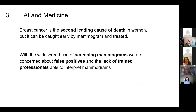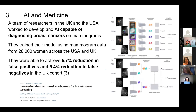Breast cancer is the second leading cause of death in women, but it can be caught early with a mammogram and treated. However, when we screen millions of women with mammograms each year, you're going to get false positives and there won't be enough radiologists to keep up with demand. A team of researchers worked on an AI capable of detecting breast cancers from mammogram data — training their AI on more than 28,000 women's mammogram datasets. You would have to spend your entire career reading x-rays to achieve that number, but an AI can do it in minutes or hours. Ultimately, the AI reduced the false negative rate by almost 10% — that's thousands of women who won't need to undergo invasive, stressful, and often needless procedures.